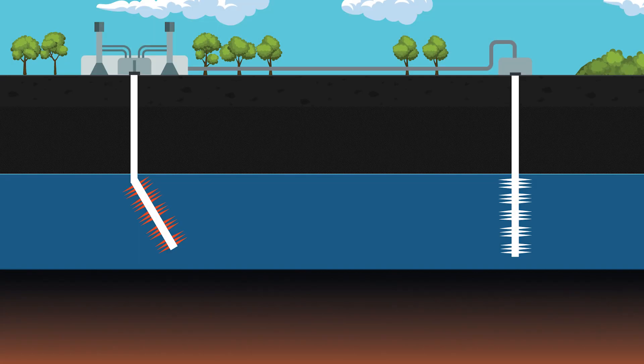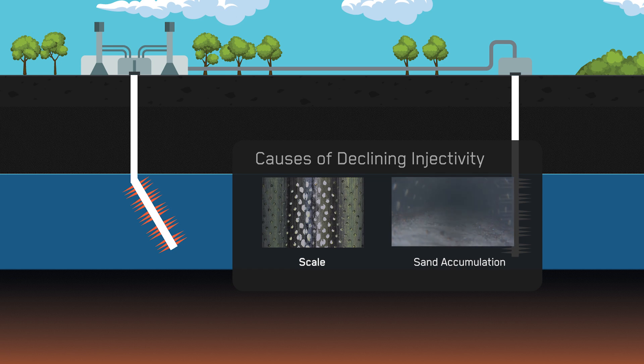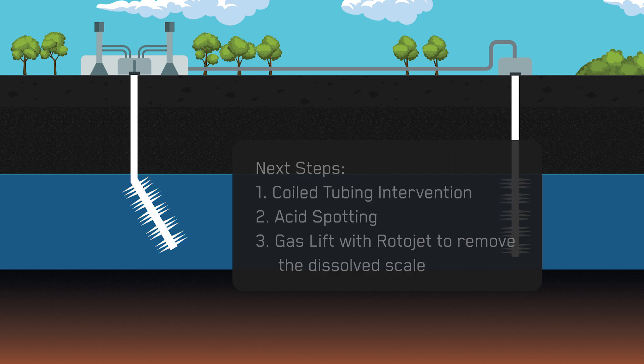Thanks to the high-definition images provided by the Optus Infinity Camera and Sand VA analysis, the operator was able to clearly understand the root cause of the injectivity issue and plan for a coiled tubing intervention to acid clean the well.